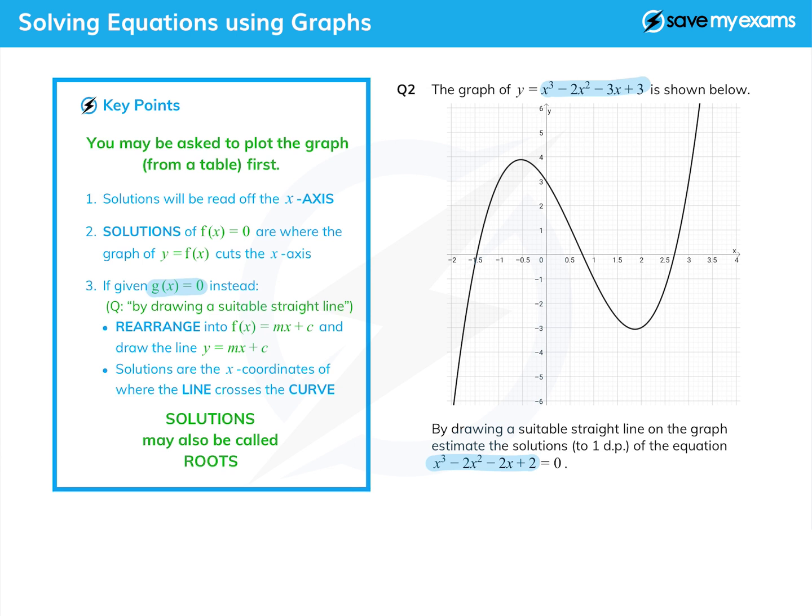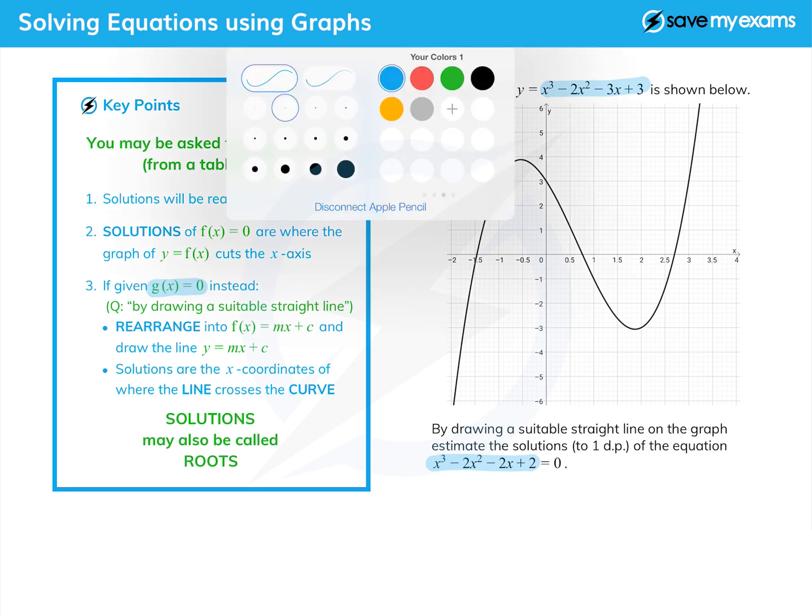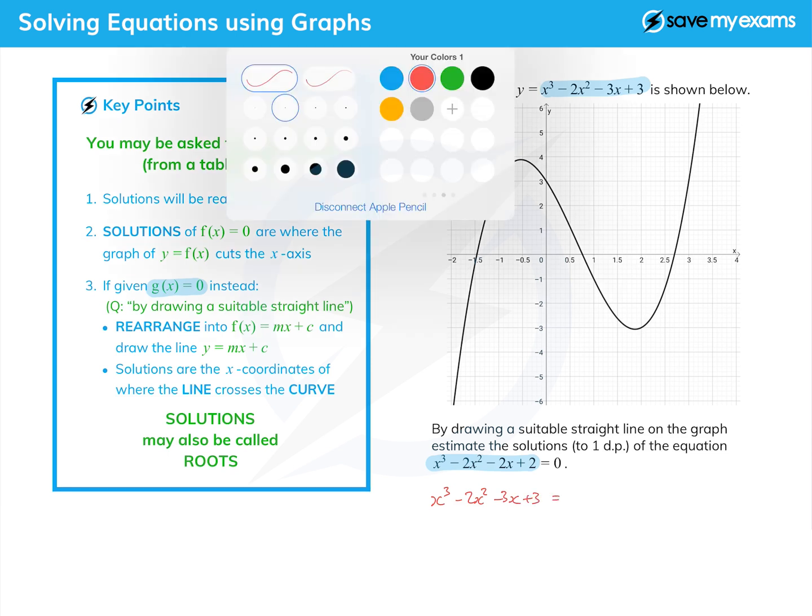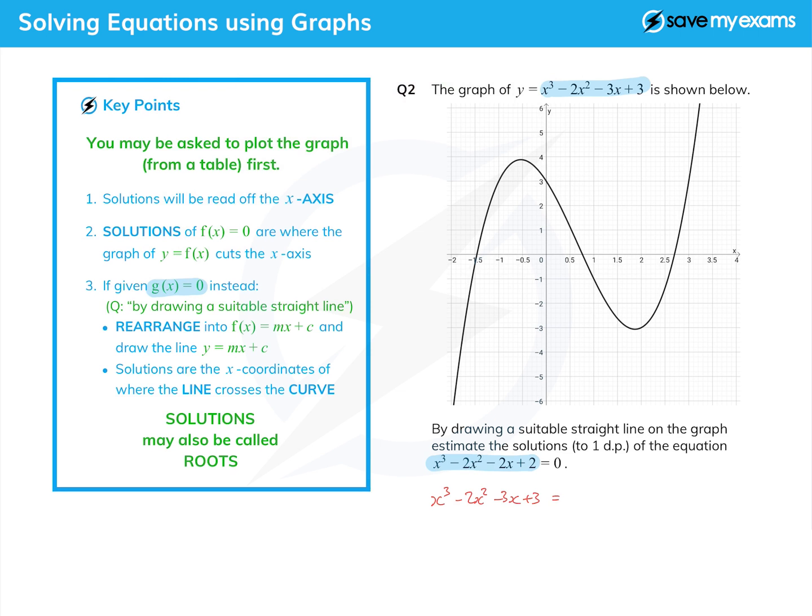So let's see what we're going to do here. We're going to take the highlighted equation at the bottom and make it look like the function we've got at the top. So what we actually want is, and it's quite a good idea just to write it down, x cubed minus 2x squared minus 3x plus 3 equals something. Well, how do we get from the top one to the bottom one?